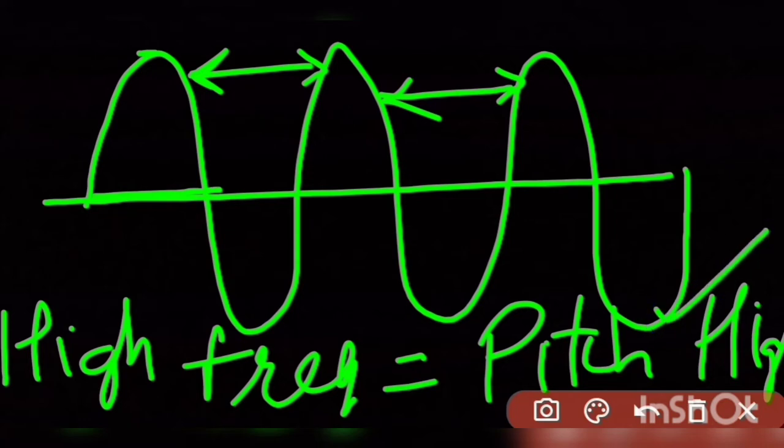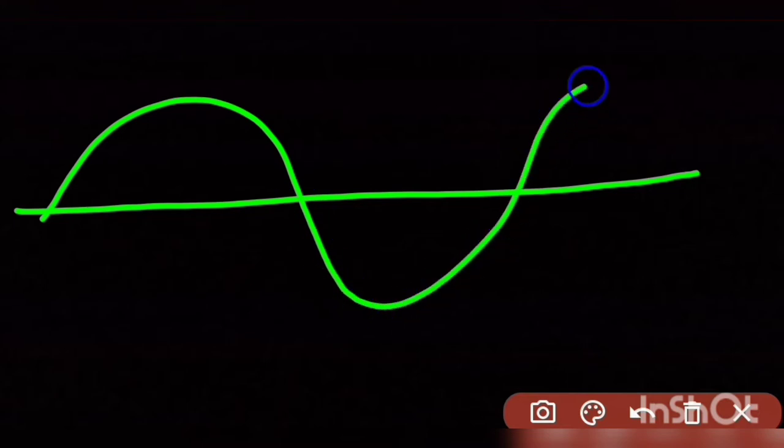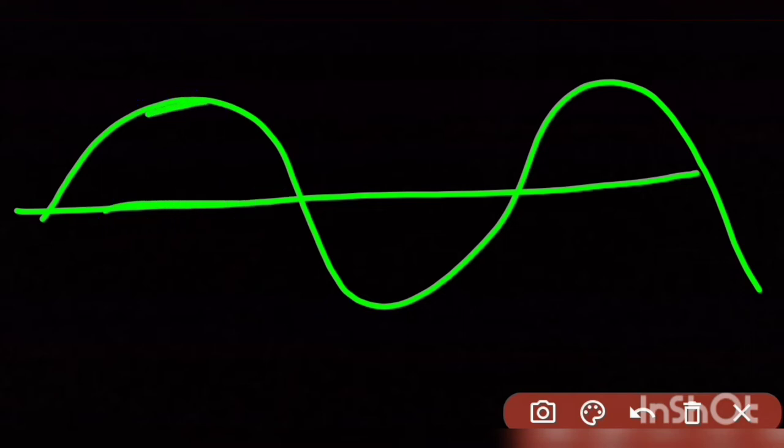Next is low pitch sound. Here we have a wave moving from left to right — that is its mean position and that is its extreme position. Here frequency is lower because the gap between two waves is very large. So when we have low frequency, the pitch is also low, and it is said that the sound is flat.